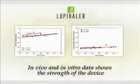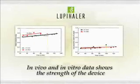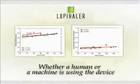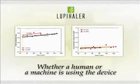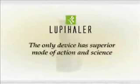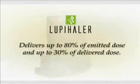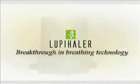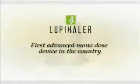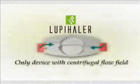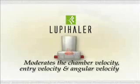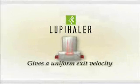The correlation between the in vivo and in vitro data talks about the strength of the device or the uniformity of the dose delivered, irrespective of whether a machine or a human being is using the device — it works in the same way. Loopyhaler is the only device in the country which, because of its superior mode of action and superior science, gives 80% emitted dose and up to 30% delivered dose. Loopyhaler is the only device with centrifugal flow feed which moderates the chamber velocity, the entry velocity along with the angular velocity, and gives a uniform exit velocity.